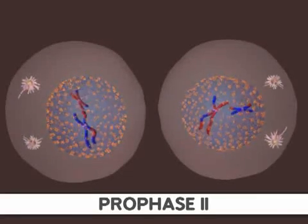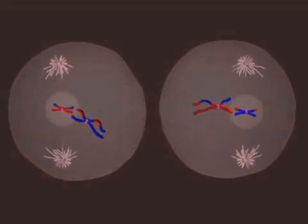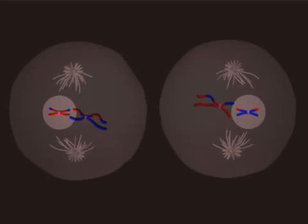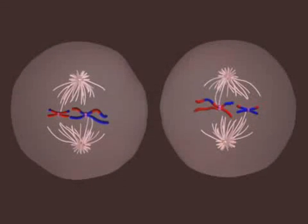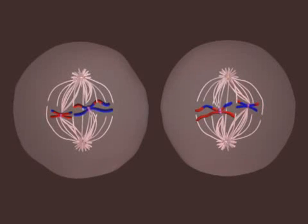The major difference between prophase II and prophase I is the fact that the daughter cells have only one copy of each homologous chromosome. So, in prophase II, there is no synapses of homologous chromosomes or crossing over.